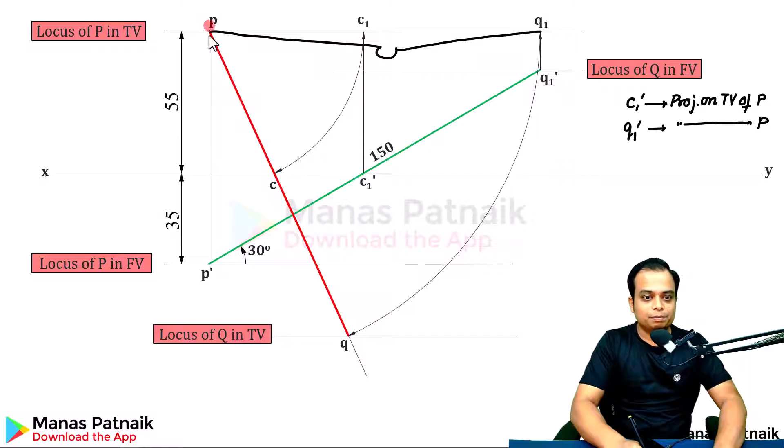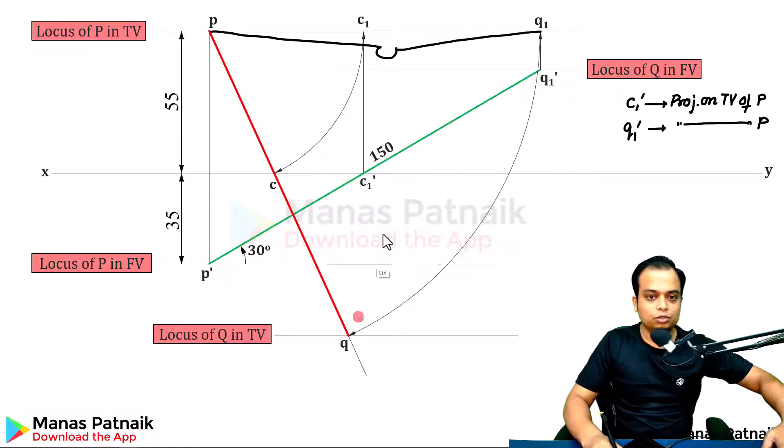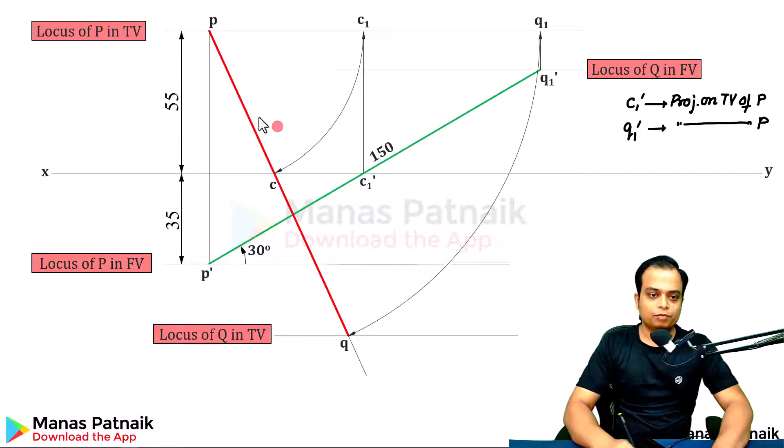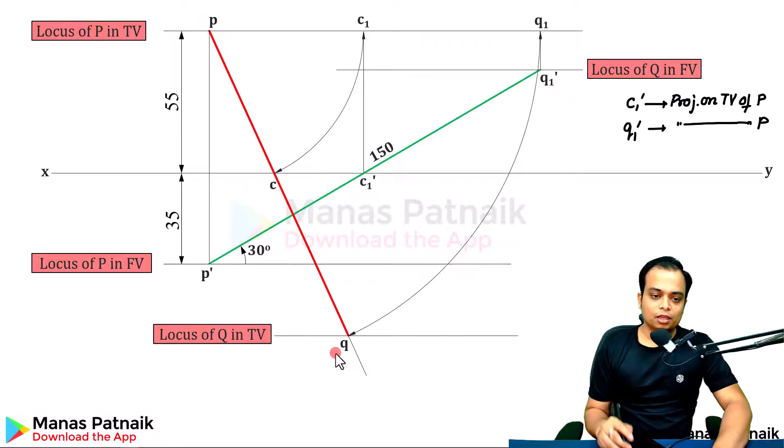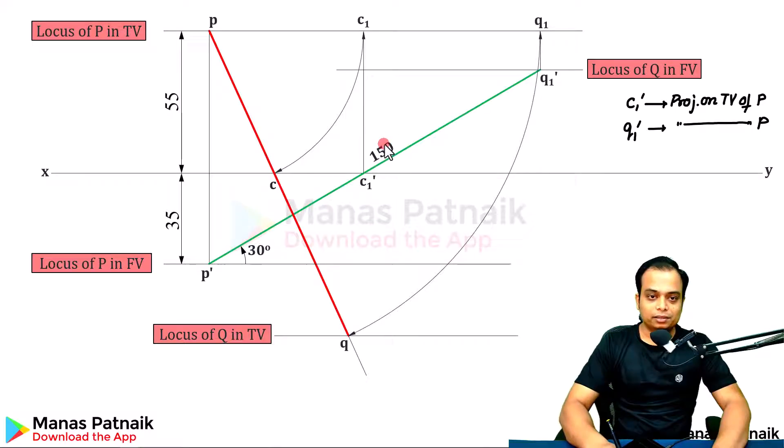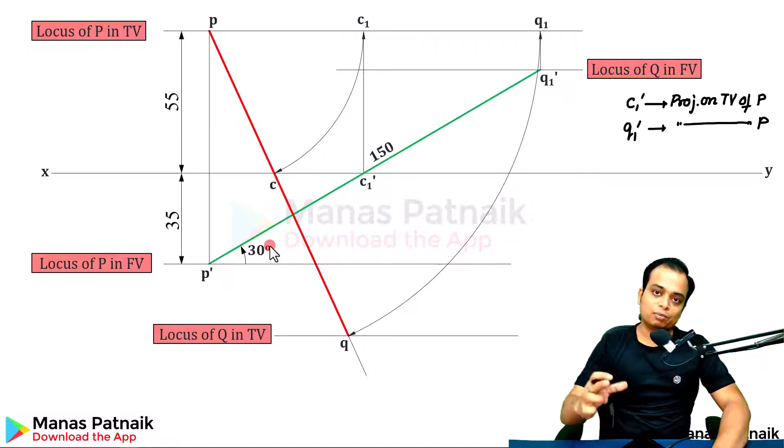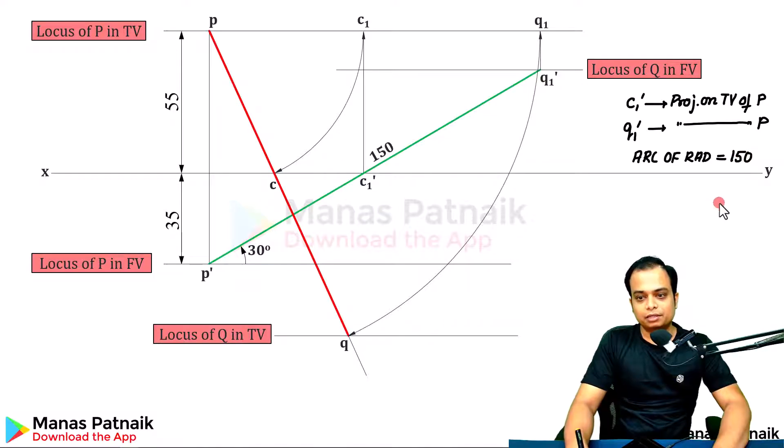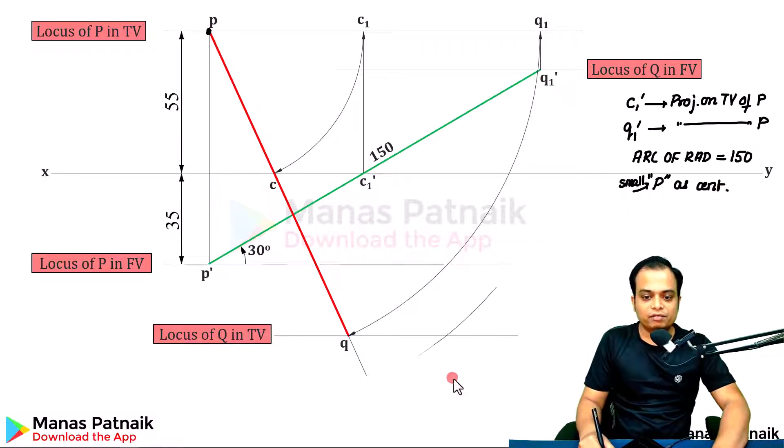We've got the final top view. What about the final front view? This green line that you see is the true length making an angle theta. Now, we are going to place one more true length with angle phi. We don't know angle phi. We only know theta. Alpha, beta, and phi are not known to us. We have to work it out. True length is 150. What you can do is, you have to take an arc of radius 150 millimeters with the small p as center. You need to cut an arc of radius 150 millimeters. It is this very point. If this is the locus of Q in top view, this is going to be Q2.